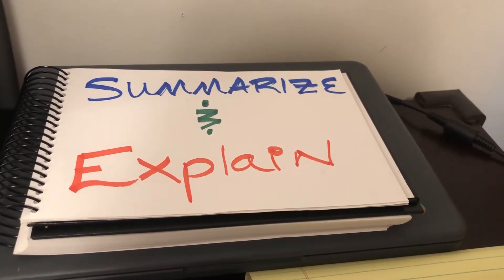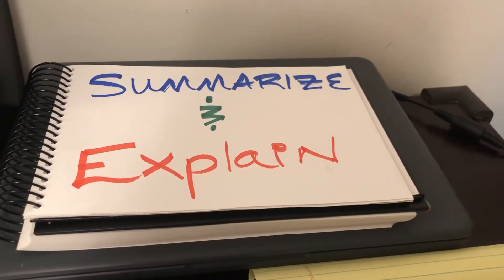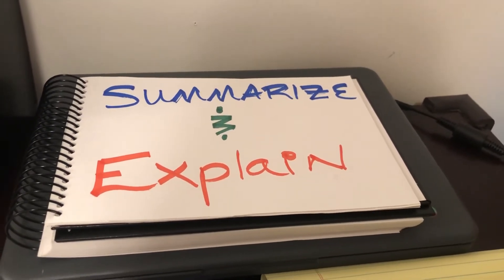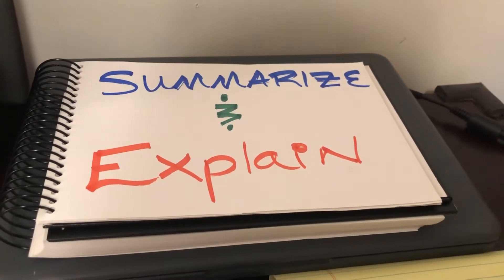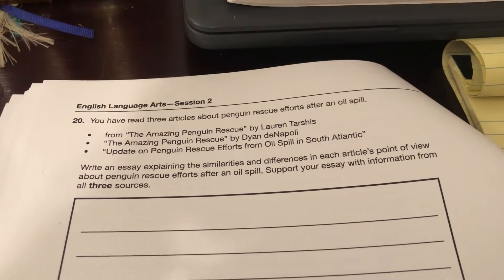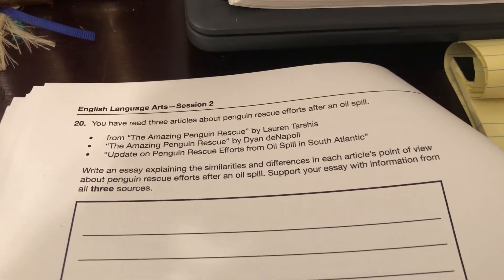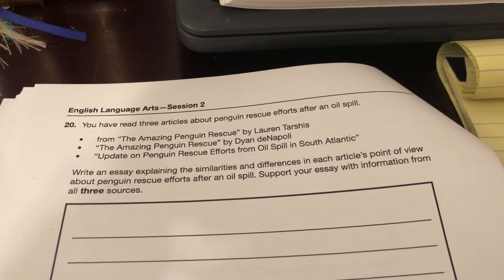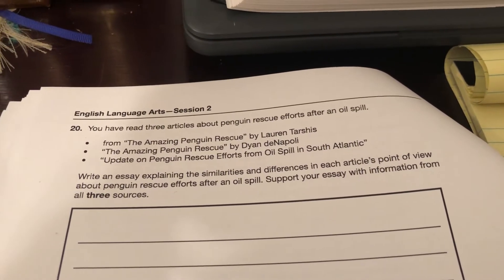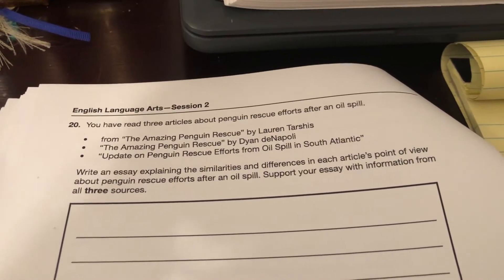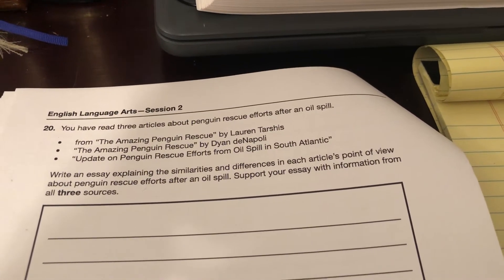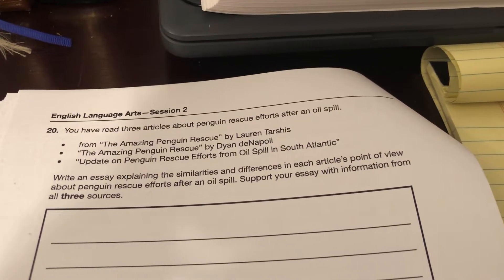It's time for the essay for the research simulation task. We remember from class that essentially all research simulation tasks are asking us to do two things: to show comprehension, they want us to summarize and they want us to explain. Here we have our prompt — it says you have read three articles about penguin rescue efforts after an oil spill: 'The Amazing Penguin Rescue' by Lauren Tarshish, 'The Amazing Penguin Rescue' by Diane de Napoli, and 'Update on Penguin Rescue Efforts from Oil Spill in South Atlantic,' which doesn't list an author. Write an essay explaining the similarities and differences in each article's point of view about penguin rescue efforts after an oil spill.